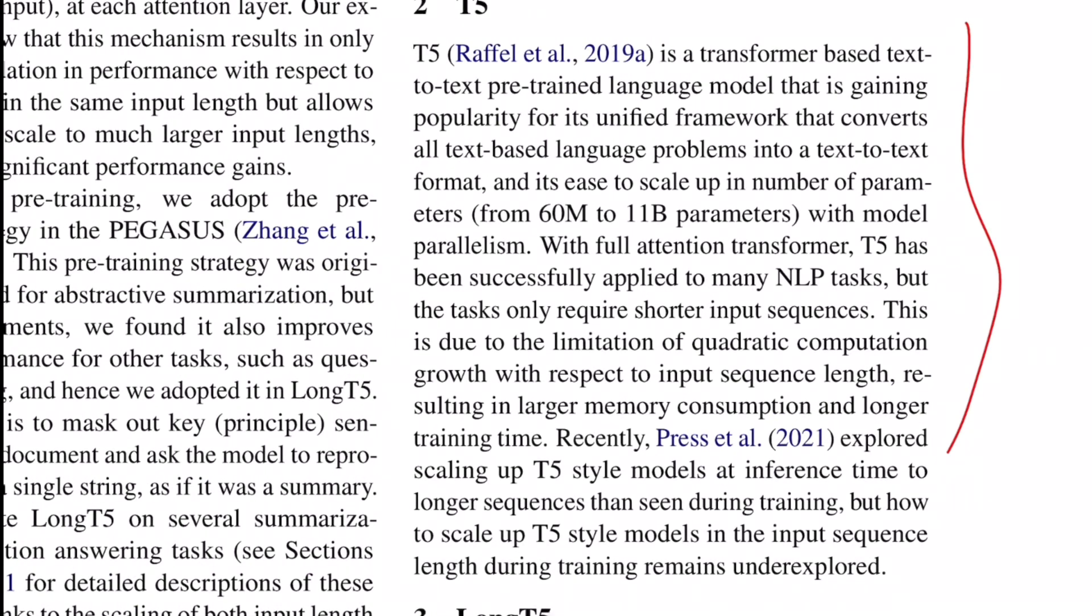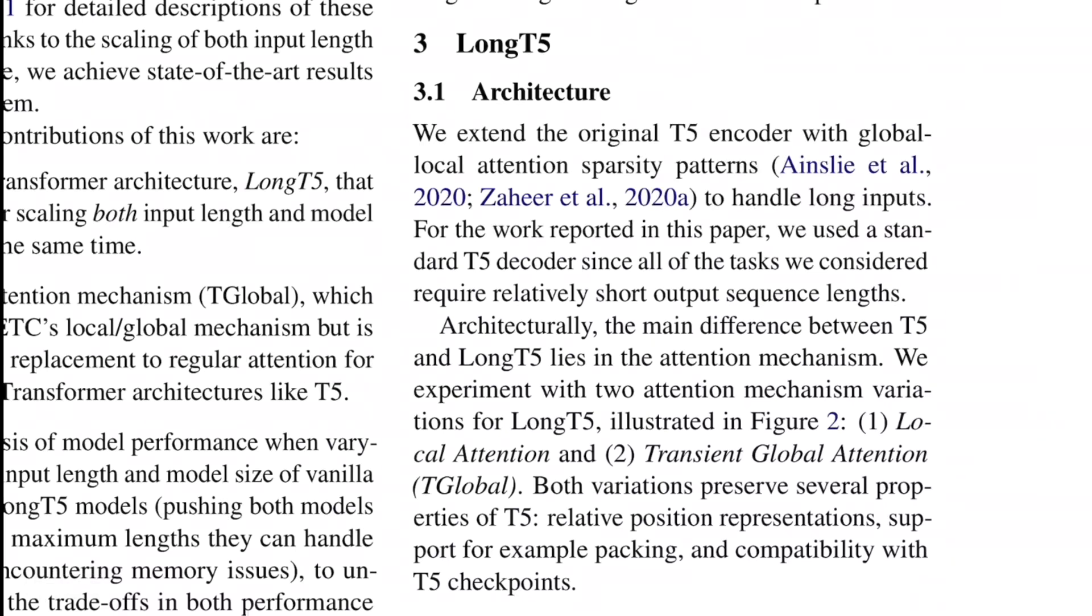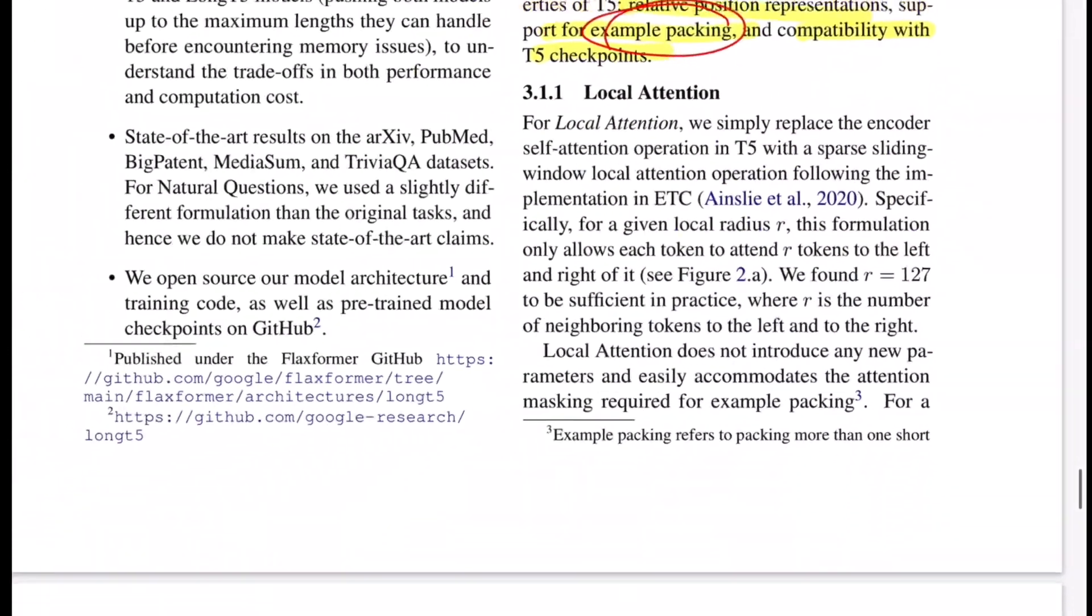So we have already seen what T5 is, and I'll put that video in the i button, make sure to check it out. So let's move on to the architecture of Long T5. So for the work reported in this paper, we used standard T5 decoder, since all the tasks were considered require relatively shorter output sequence length. Okay, so the main thing that we are tweaking here is the attention mechanism that happens on the encoder side. And that's what they say, which is, the proposed two mechanisms, one is local attention, other is transient global attention. And both adhere to the properties that the original T5 has, which is relative position representation, support, for example, packing, compatibility with the T5 checkpoint. So here, example packing is something new. So example packing is the idea where, let's say, merge or concatenate multiple examples to make one bigger sequence. So that you don't waste out the privilege that you get of going through longer sequences. But unfortunately, your example was pretty short. So there you can concatenate multiple examples to adhere to that max length.